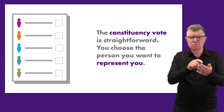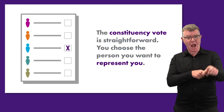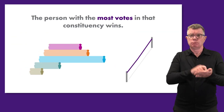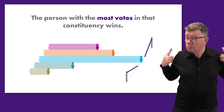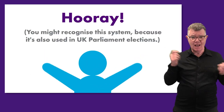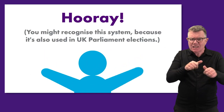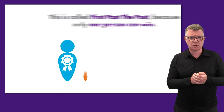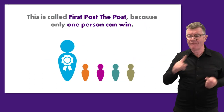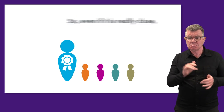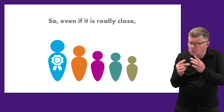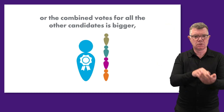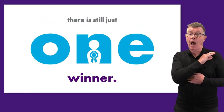The constituency vote is straightforward. You choose the person you want to represent you. The person with the most votes in that constituency wins. You might recognise this system because it's also used in UK Parliament elections. This is called first-past-the-post because only one person can win. So even if it is really close, or the combined votes for all the other candidates is bigger, it's still just one winner.